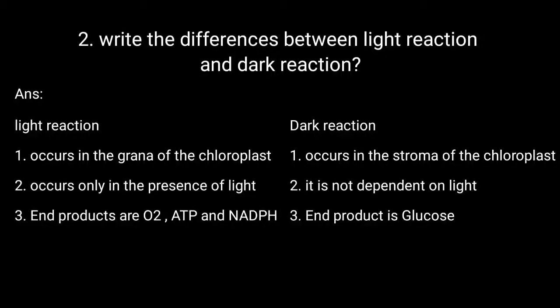Write the differences between light reaction and dark reaction. Answer: Light reaction occurs in the grana of the chloroplast. It occurs only in the presence of light. End products are O2, ATP, and NADPH.